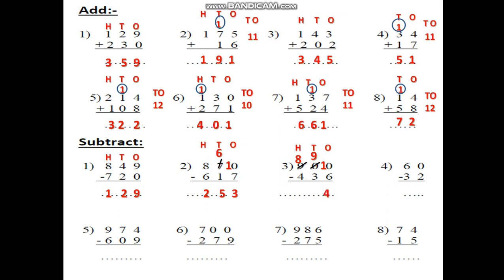10 minus 6. After 6: 7, 8, 9, 10. It will be 4. 9 minus 3. After 3: 4, 5, 6, 7, 8, 9. It's 6. 8 minus 4. After 4: 5, 6, 7, 8. It will be 4. The answer is 464. 60 minus 32.